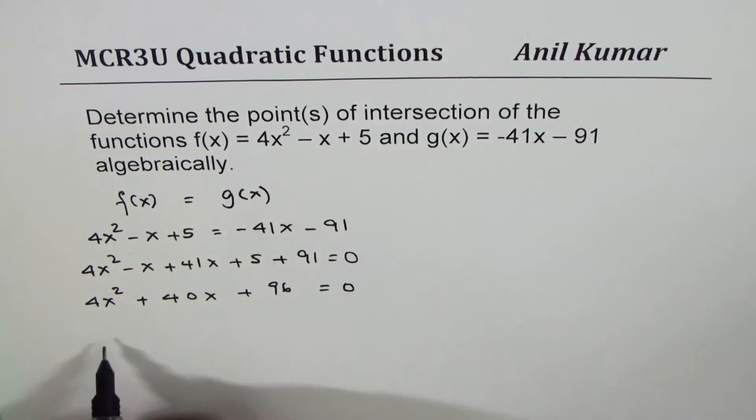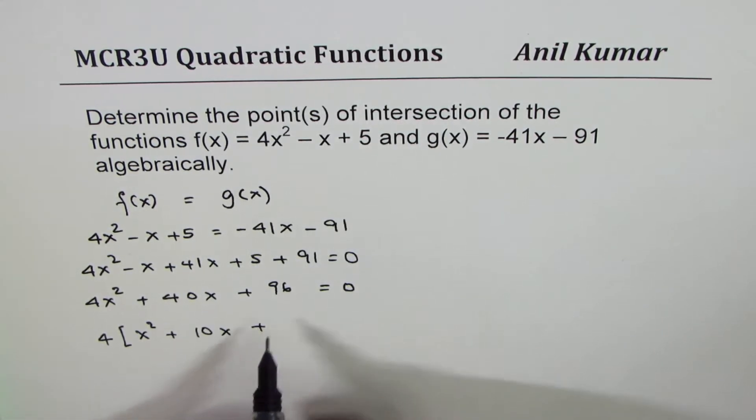We could factor out 4 which is a common factor. So we get x² + 10x + 24 = 0.